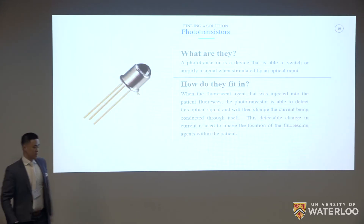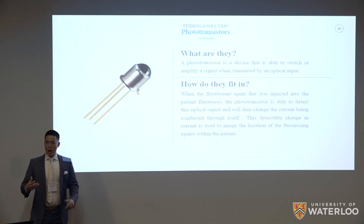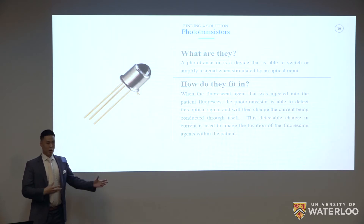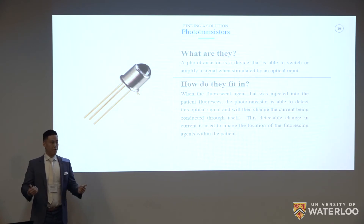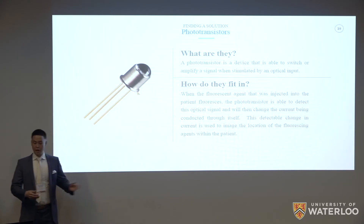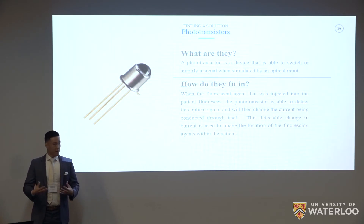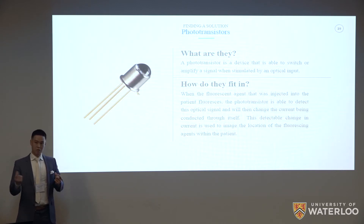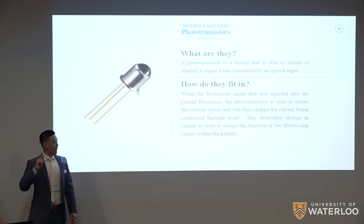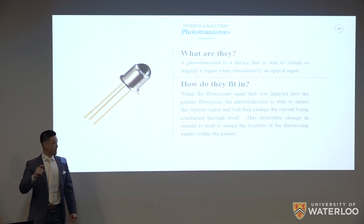Phototransistors are a type of detection method used to pick up on the fluorescence of those biomolecular tags and markers. Fundamentally, it's a device that can switch or amplify an electrical signal based on optical input. When the fluorescent agents in the patient emit light, the phototransistor picks up on that and changes the current conducted through the transistor. That detectable change in current allows the physician to image the fluorescent agents within the patient's body.